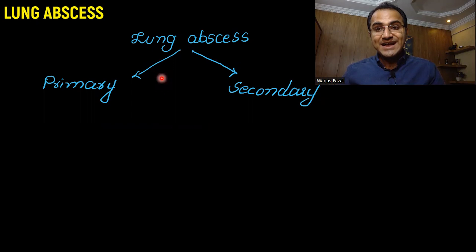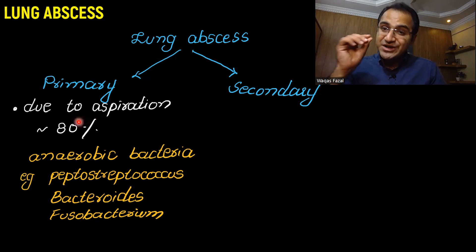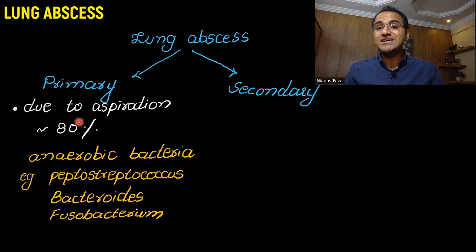This is a picture showing lung abscess. Lung abscess can be classified into two types: either primary or secondary. Primary lung abscess is the one that occurs due to aspiration, and in 80% of the cases, aspiration is the cause of lung abscess.